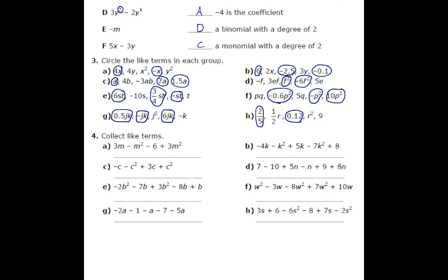Moving on to the last one on this page, number 4. The instructions are to collect like terms — first identifying the terms that are like terms, and then combining them together. We have to take a look at all these terms and see if any can be put together.